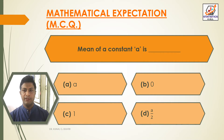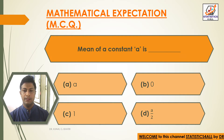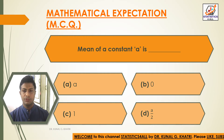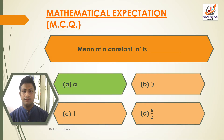Mean of a constant A is: Option A — A; Option B — 0; Option C — 1; Option D — A by 2. The answer is Option A: A. The mean of a constant A is A.